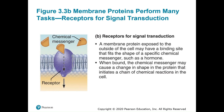Receptors: chemical messengers float in the extracellular fluid and can bind to the binding site of a transmembrane protein, making the protein act as a receptor. This can change the shape of the protein, cause chemical reactions to occur, or close off a chain of reactions and halt them temporarily.